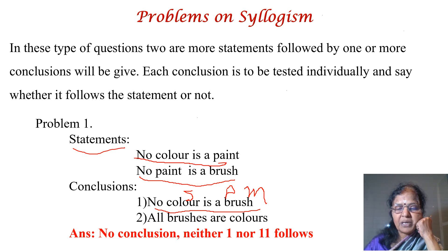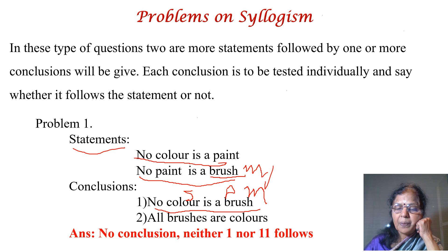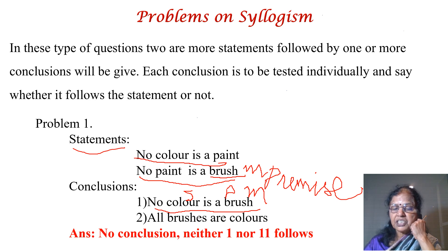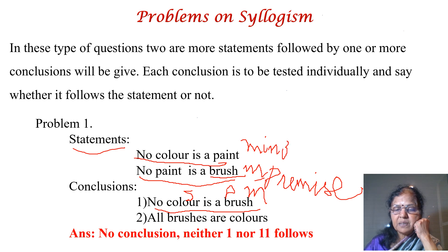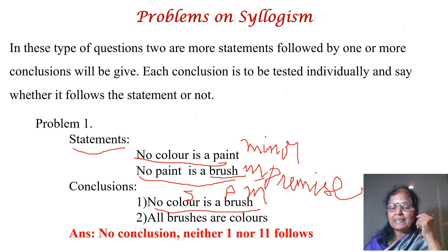See which statement contains the major term — brush is in the second statement, so this becomes the major premise. Color is in the first statement, so this becomes the minor premise. Always the major premise should come first. They are not aligned — the major term is in the second statement, not the first — so you have to change the order of the sentences.